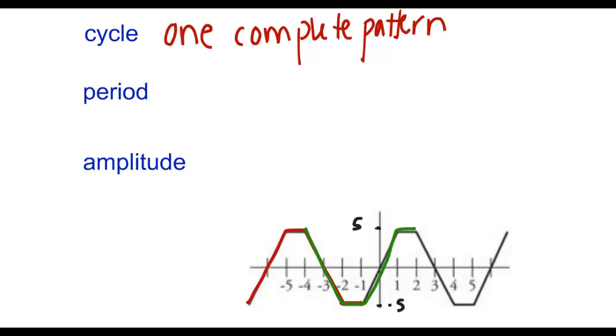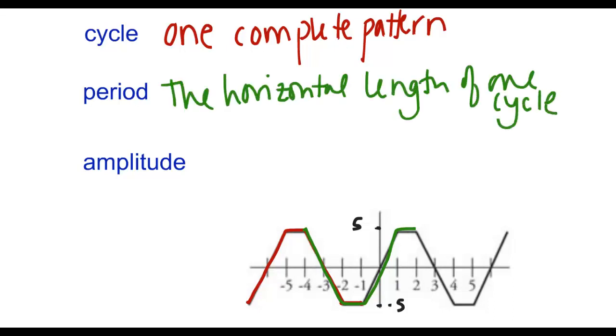The horizontal length of that cycle is the period. So in this example, let's just look at that green outline of one cycle that I saw. I started right here and ended right there. That represented one full cycle.